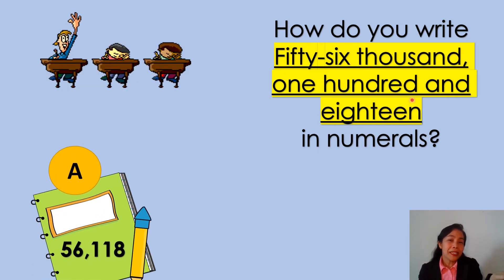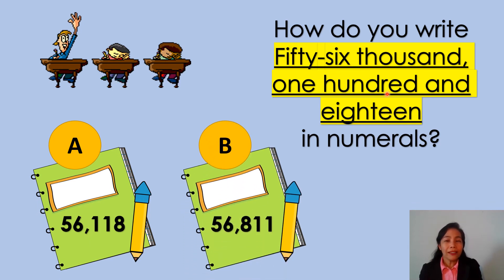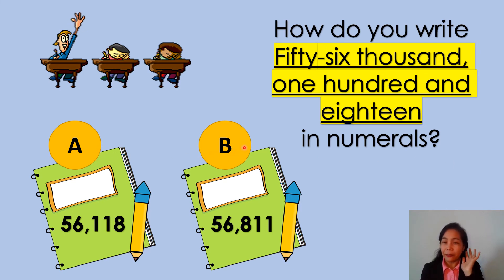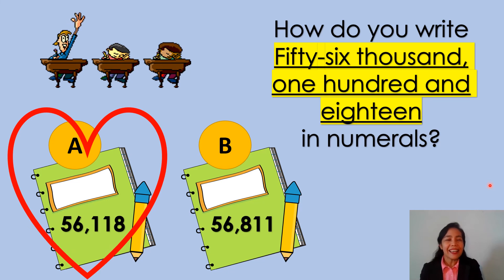Next one. How do you write 56,118 in numerals? You choose A or B. Listen: 56,118 in numerals. All right, you are correct! The answer is letter A, 56,118.